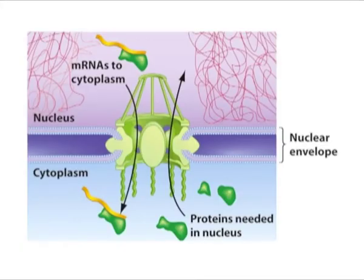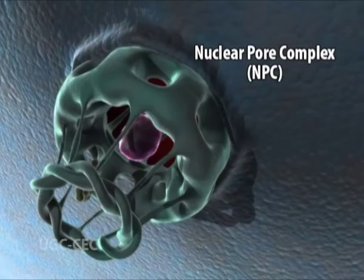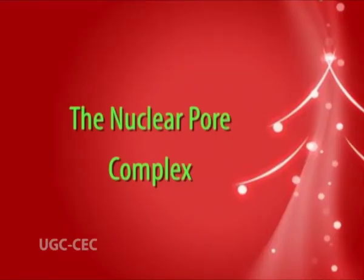The nucleus is separated from the cytoplasm by two membranes, which form the nuclear envelope. The only connection between the cytoplasm and the nucleus is through channels called the nuclear pore complex, NPC. NPCs are large proteinaceous structures that form aqueous channels across the nuclear envelope.